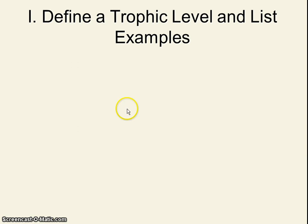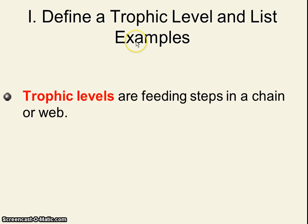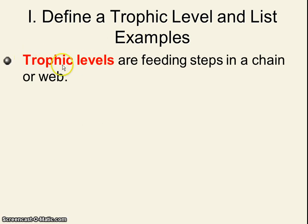Our first Roman numeral, which we're going to write and underline as the whole title at the top to keep our outline notes organized, is to define a trophic level, because that's a new vocabulary word, and to list examples. This new vocab word, which you should probably box and highlight, is trophic level. Trophic levels are the feeding steps in a food chain or web.